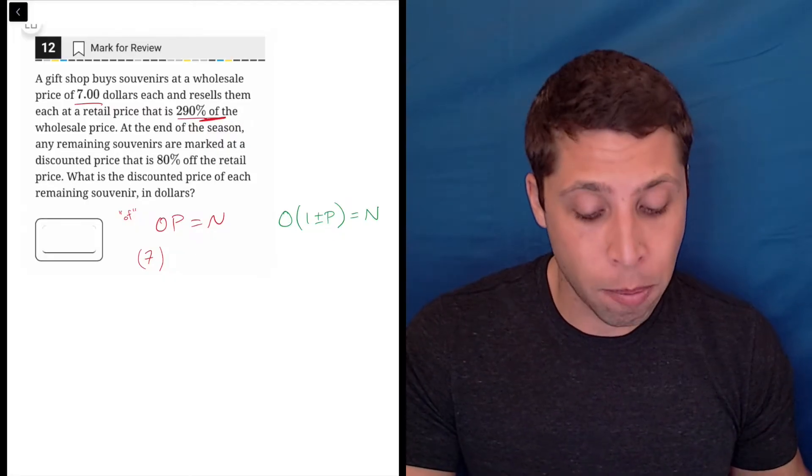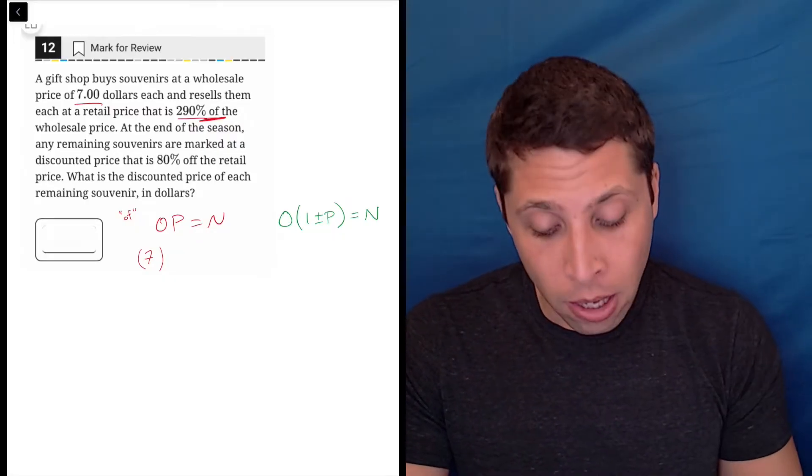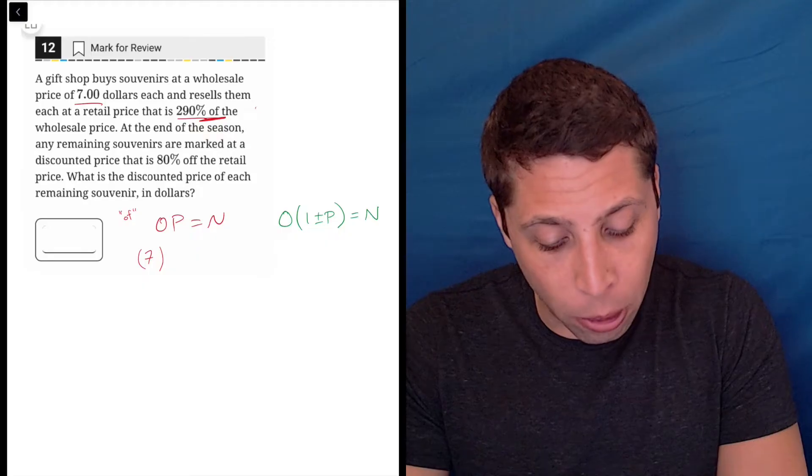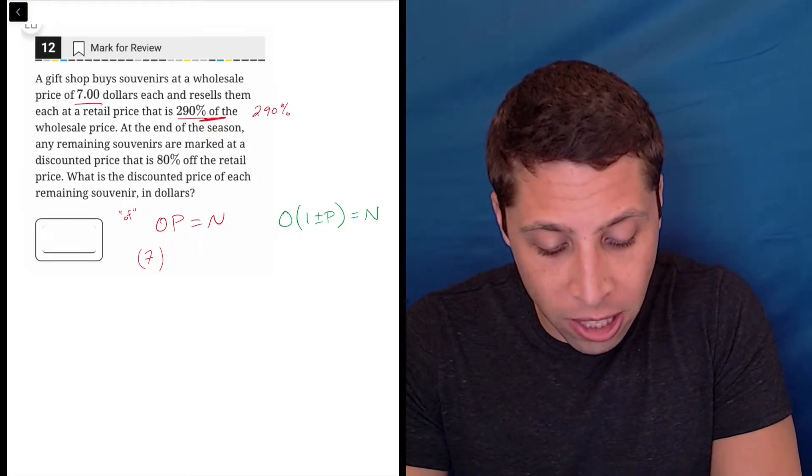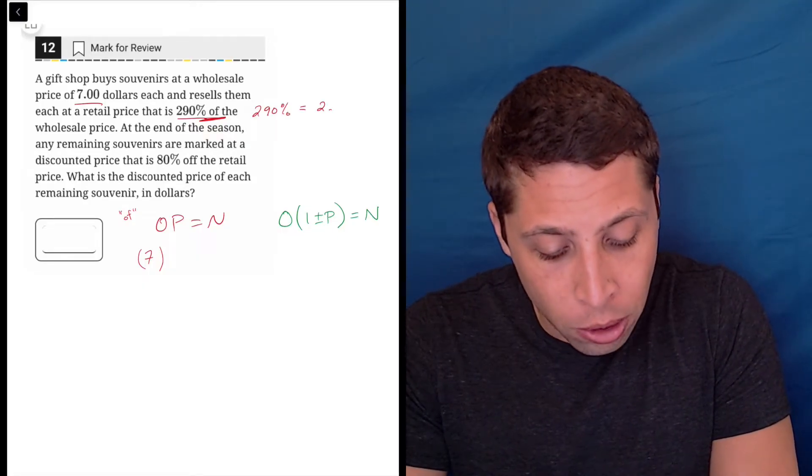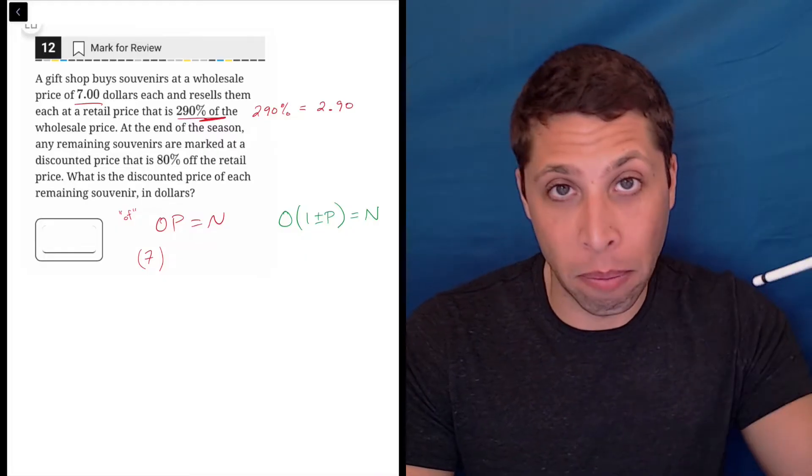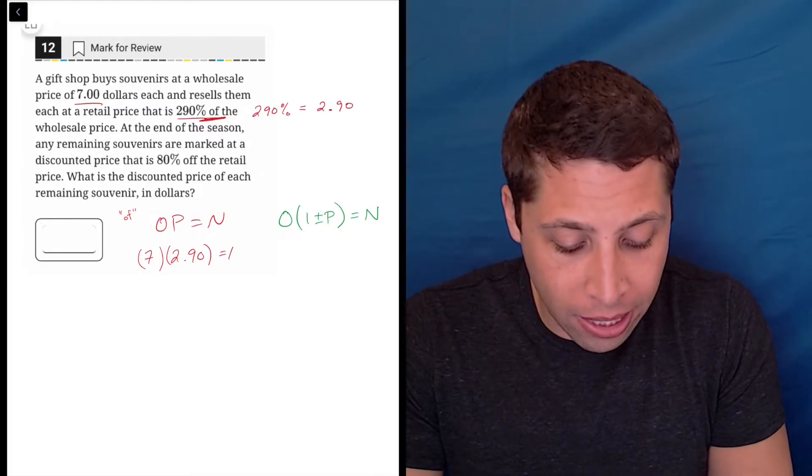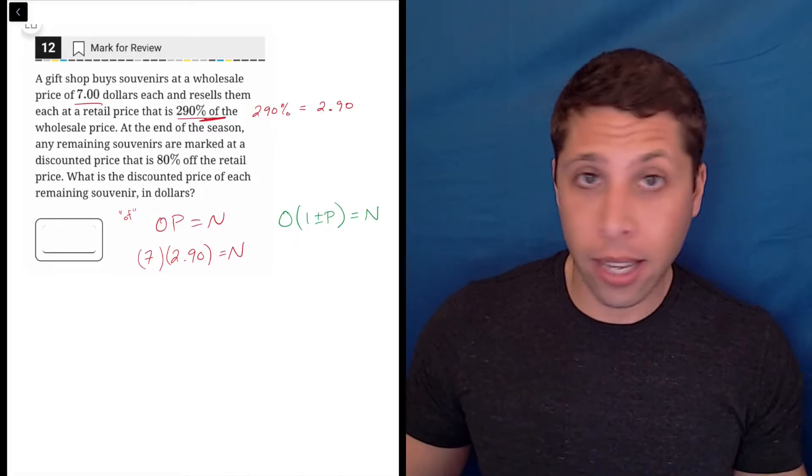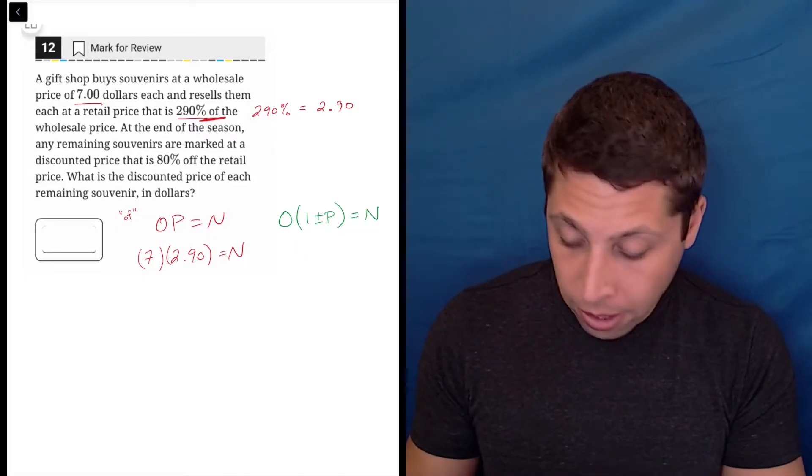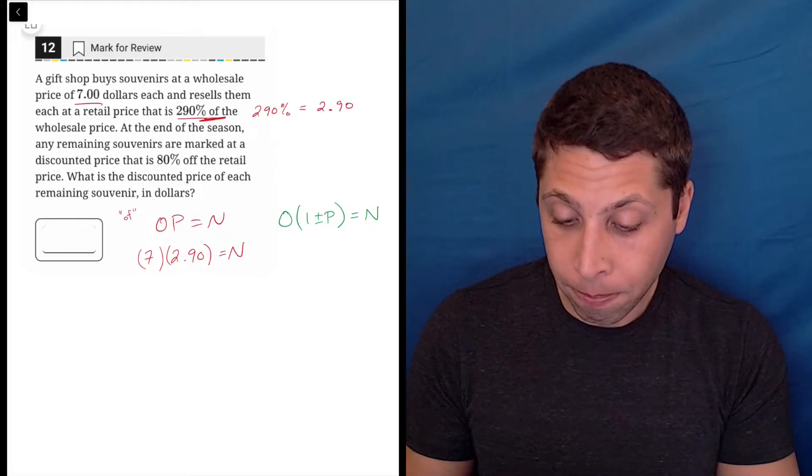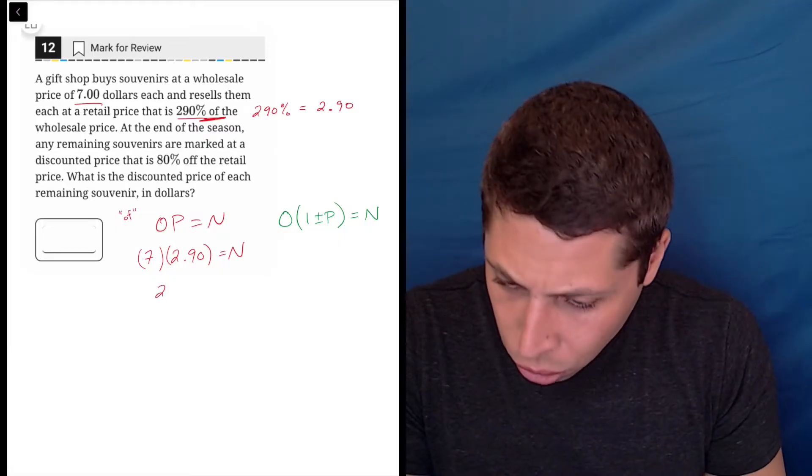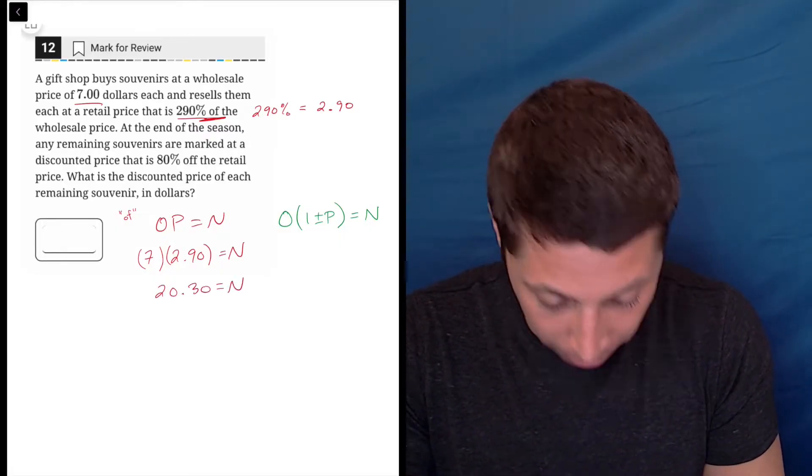The P stands for the percent, but that is going to be as a decimal, so we have to move the decimal point. So two hundred and ninety percent is equivalent to two point nine zero. We move the decimal. So two point nine zero, and that's going to give us a new value. So in this case, very straightforward, you're just multiplying seven times two point nine, which is twenty dollars and thirty cents. Okay, so that's my new amount.